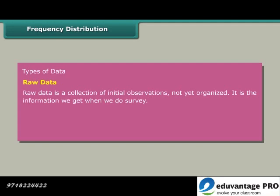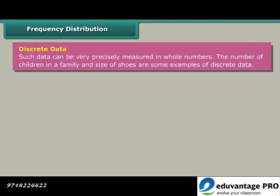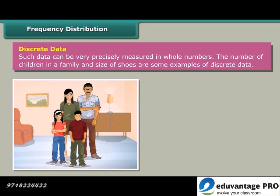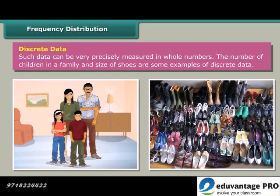Raw data is a collection of initial observations not yet organized. It is the information we get when we do survey. It can be classified into two types: Discrete data and Continuous data. Discrete data can be very precisely measured in whole numbers. The number of children in a family and size of shoes are some examples of discrete data.